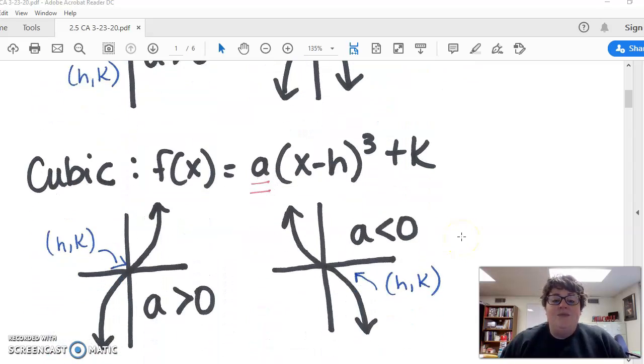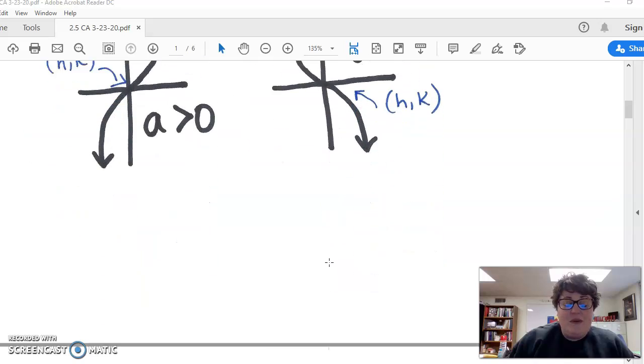Now let's move on to cubics and refresh what a cubic looks like. The only difference in the formula is the cube. This is a positive one on the left and a negative cubic graph on the right, so direction matters. If you have trouble drawing these, remember it's like half a parabola up and half a parabola down.